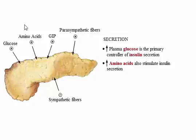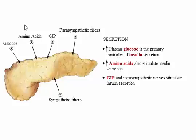When blood glucose levels fall below normal in the fasting or post-absorptive state that occurs well after a meal, insulin secretion is inhibited. Hormones of the GI tract, particularly glucose-dependent insulinotropic peptide, or GIP, and parasympathetic nerves also stimulate secretion of insulin.